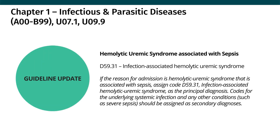Similarly for sepsis, typically the appropriate code for the underlying systemic infection is coded first, followed by severe sepsis and any organ failure. However, the updated guidelines specifically for hemolytic uremic syndrome associated with sepsis state that code D59.31 should be reported as the primary diagnosis and then the code for sepsis as a secondary diagnosis. This is the second guideline change for chapter one, specifically for hemolytic uremic syndrome associated with HIV and with sepsis.